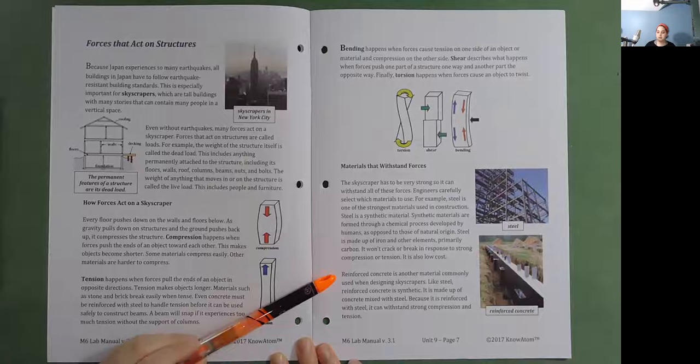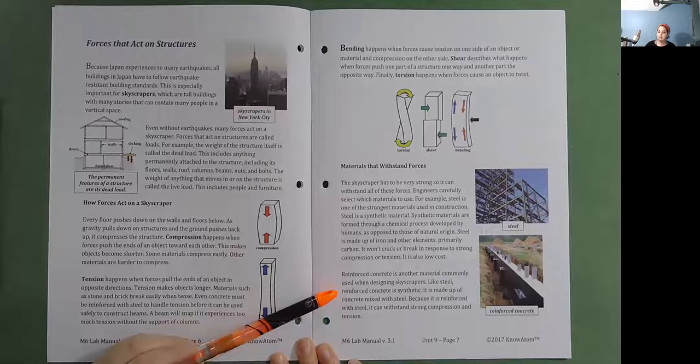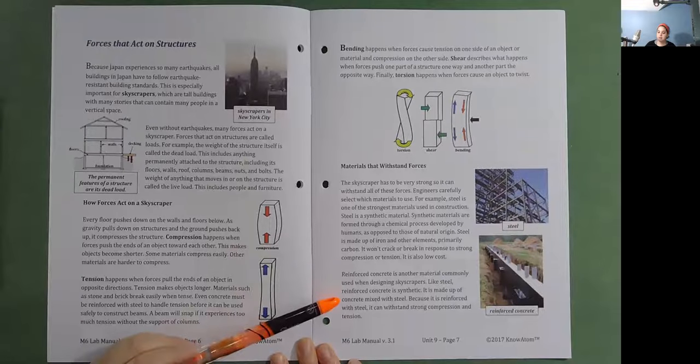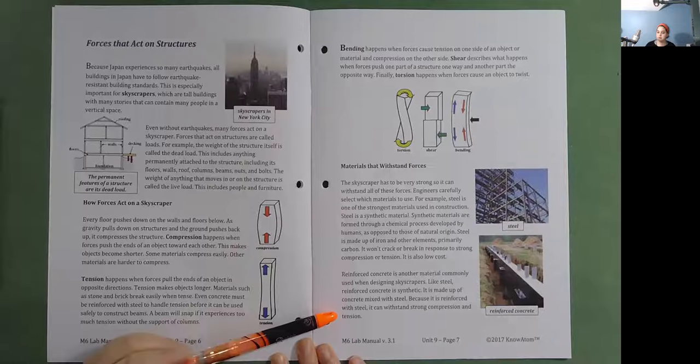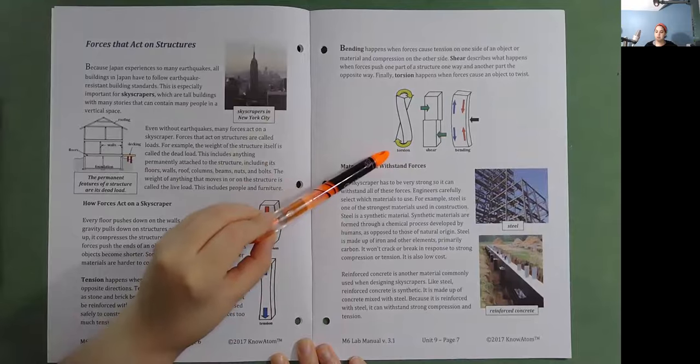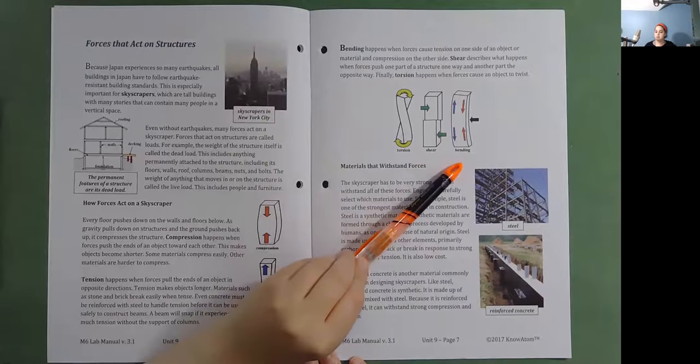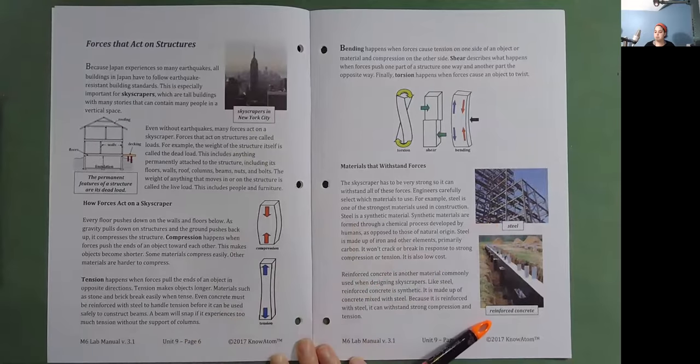Reinforced concrete is another material commonly used when designing skyscrapers. Like steel, reinforced concrete is synthetic. It is made up of concrete mixed with steel. Because it is reinforced with steel, it can withstand strong compression and tension. So here's a diagram of torsion, shear, and bending. Here's a picture of steel. And here's one of reinforced concrete.